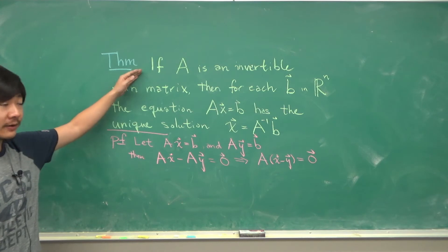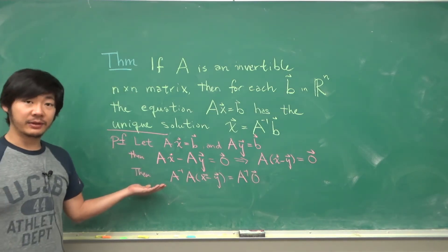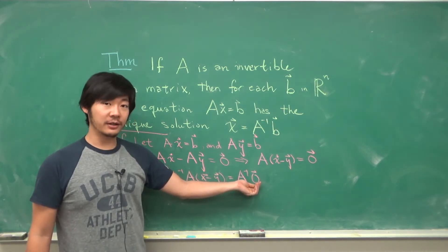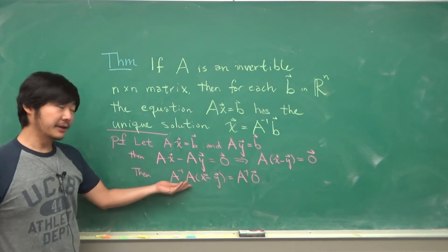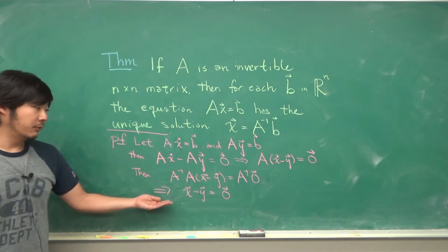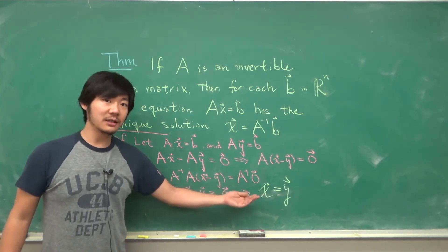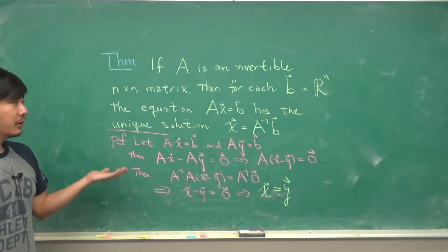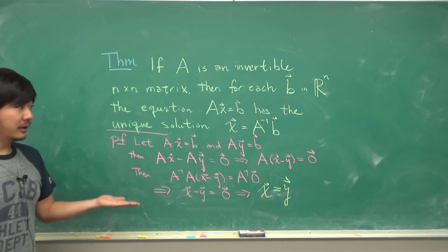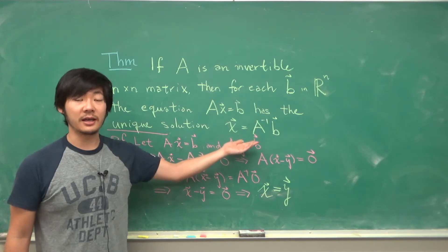But since A is invertible, let's apply the inverse to both sides. So we get something like this. But any matrix applied to the 0 vector is a 0 vector, and this is its inverse so it's the identity. So this is the vector X minus Y, and so we get that X minus Y is equal to 0, or that the vector X is equal to the vector Y. So the solution must be unique and the solution we can find just by applying the inverse to both sides. So X is A inverse B.